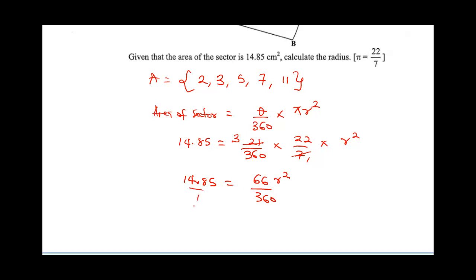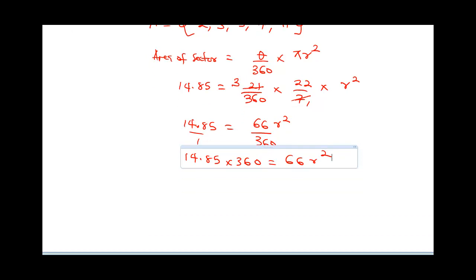Cross-multiplying, this is going to be 14.85 times 360 equals 66 r squared. We can make r squared the subject of our formula. r squared is going to be 14.85 times 360 divided by 66.